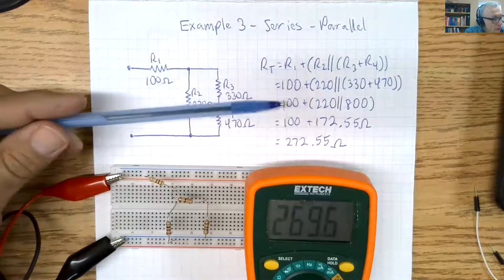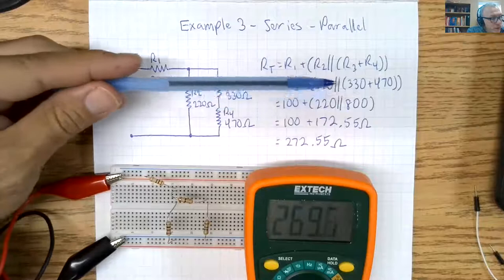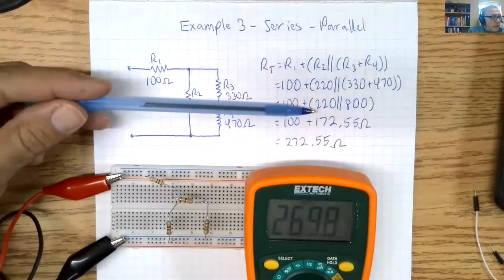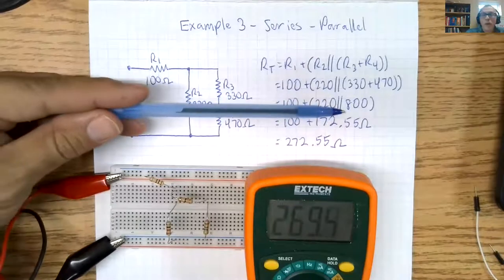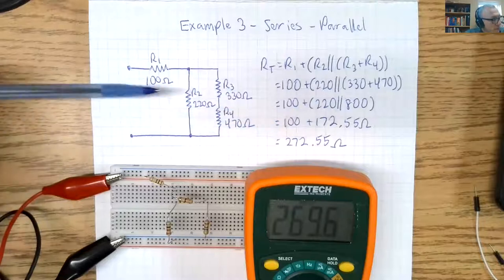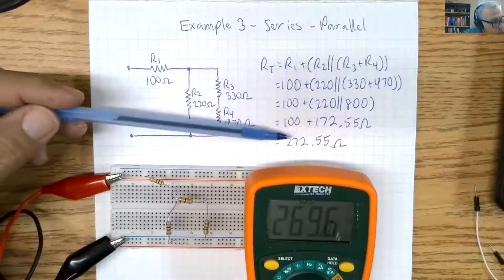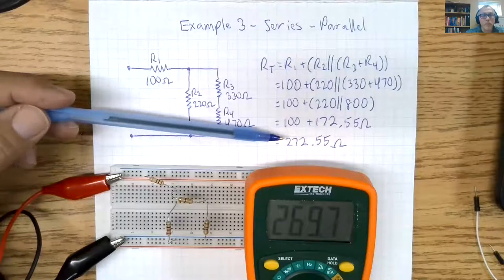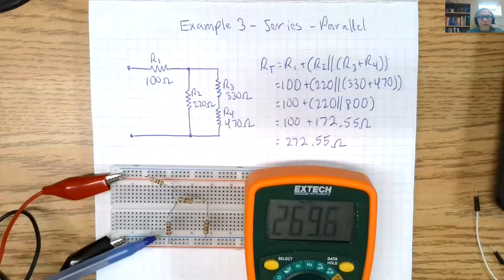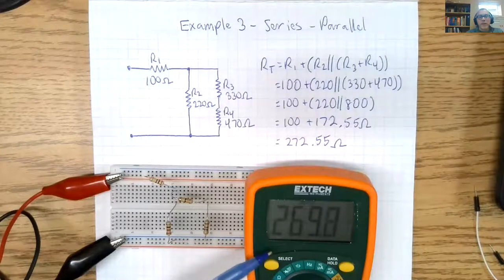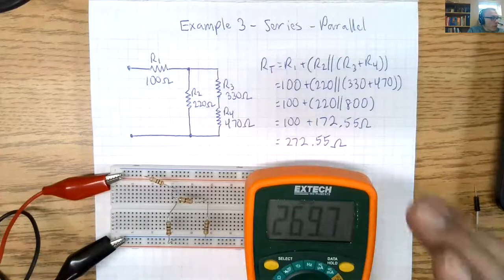So I have 100 plus 220 in parallel with the sum of 330 and 470. So I have here 220 in parallel with 800, which works out to 172.55 plus R1, which comes out to 272.55 ohms. So I have the circuit connected here. And again, my measured RT is within range. So my circuit is correct.